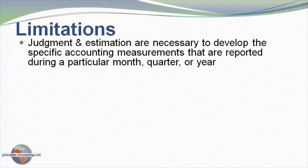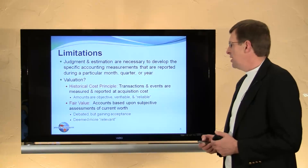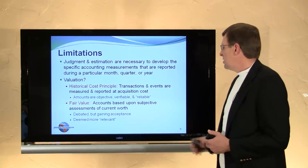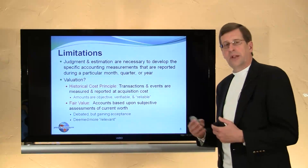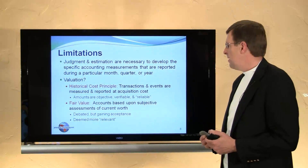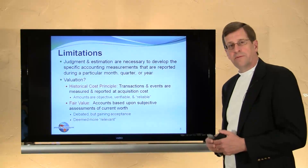There are limitations to accounting that you ought to be aware of up front. First of all, it's not a hard science — it is a social science. It involves subjective judgments and estimations that are necessary to develop specific accounting measurements for a particular period of time. There are also interesting issues related to valuation: should amounts be measured at historical cost or fair value? Historical cost means that as transactions and events occur, we capture the cost at that time and maintain it in the accounting records as an objective, verifiable, and reliable measure for reporting purposes.